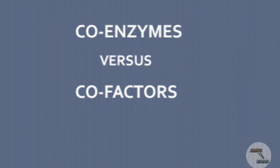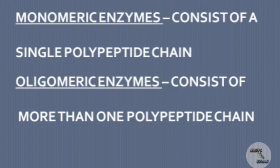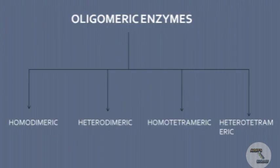Enzymes consisting of a single polypeptide chain or subunit are called monomeric enzymes. Ribonuclease of bovine pancreas, DNA polymerase I of E. coli, and phosphoenolpyruvate carboxykinase of human mitochondria are examples of monomeric enzymes. Enzymes consisting of more than one polypeptide chain are called oligomeric enzymes. Glyceraldehyde-3-phosphate dehydrogenase and pyruvate kinase are examples of oligomeric enzymes.